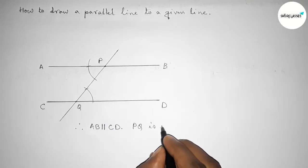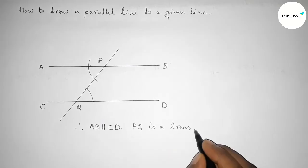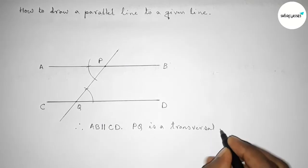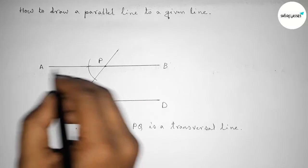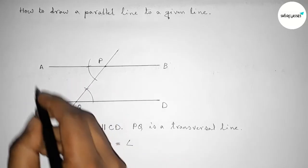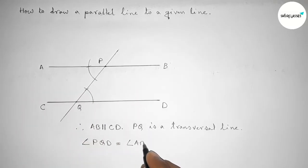And if you don't know about transversal line, so first you have to read about transversal line. And now angle PQD equals to here the angle, so we can write angle APQ. And also we know that these two angles are alternate angles or alternative angles.